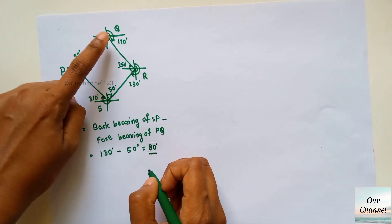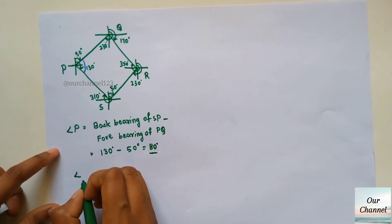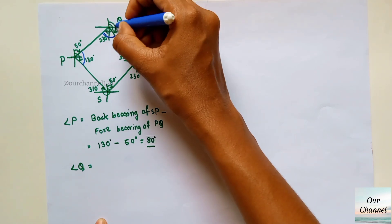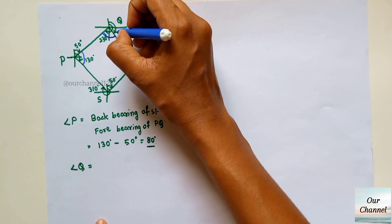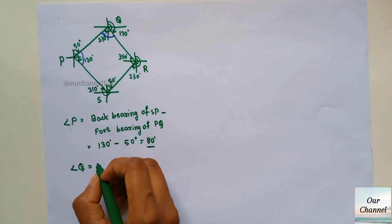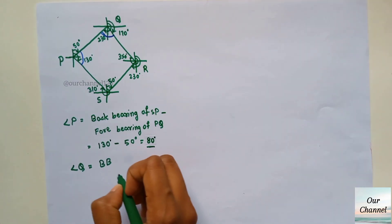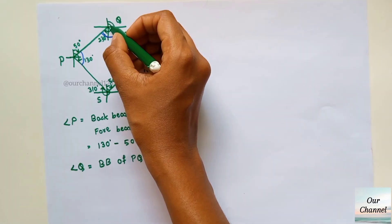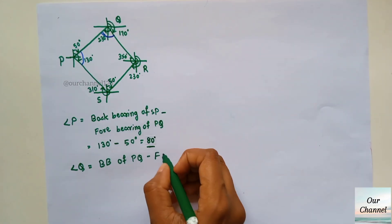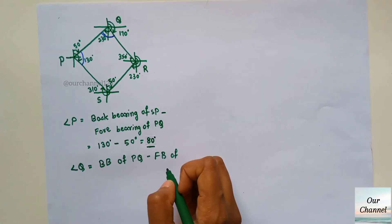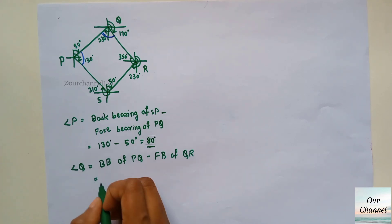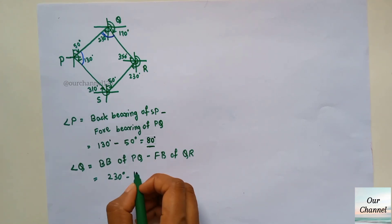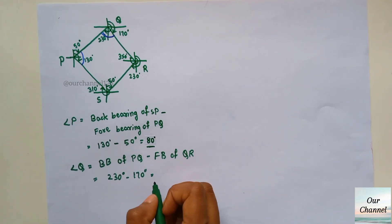Similarly, from the picture we can find angle Q. Angle Q equals 230 degrees minus 170 degrees, where 230 degrees is the back bearing of PQ and 170 degrees is the fore bearing of QR. So angle Q equals 230 degrees minus 170 degrees, which gives us 60 degrees.